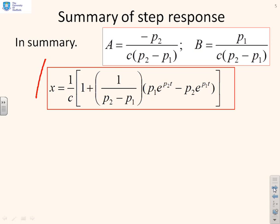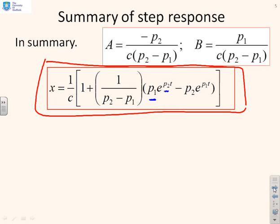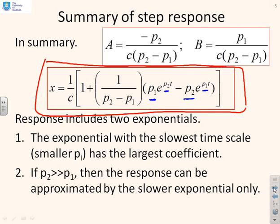Substituting those back into my original expression, this is the solution for x(t): x equals 1/c times [1 plus 1/(p₂ minus p₁) times (p₁e^(p₂t) minus p₂e^(p₁t))]. Notice this interchange: p₁ multiplies the exponential of p₂ and p₂ multiplies the exponential of p₁. The response includes two exponentials. The exponential with the slowest timescale, which is the one with the smallest p₁, has the largest coefficient. So the slowest exponential has the biggest coefficient and therefore makes the biggest contribution to the response.